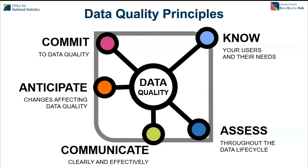I'm very quickly going to remind you of the five data quality management principles we included in the data quality framework. These are the five principles to help you establish a strong data quality culture: commit to data quality, know your users and their needs, assess quality throughout the data life cycle, communicate data quality clearly and effectively, and anticipate changes forthcoming to your data quality that might affect you in the future. To support these principles, we're going to be developing a data maturity model to help you assess how well you are doing with data quality.